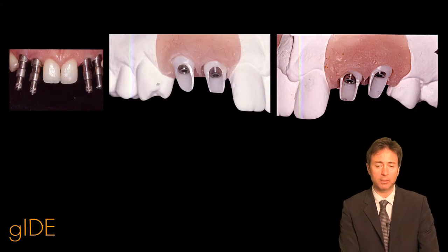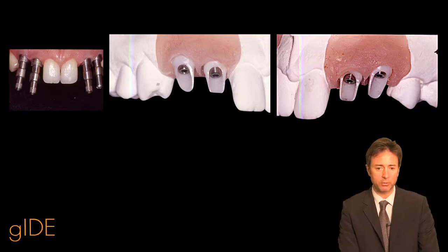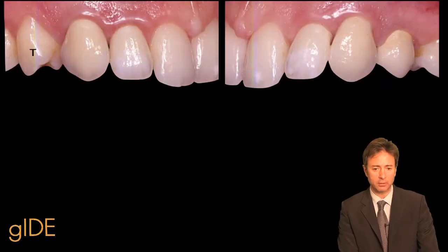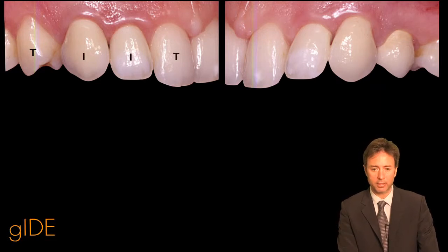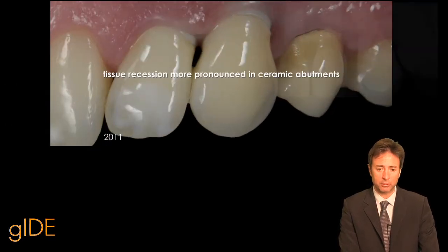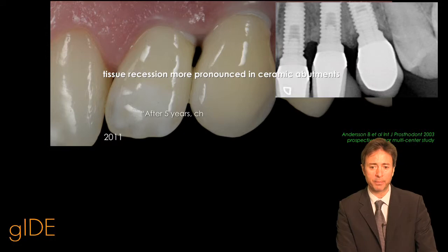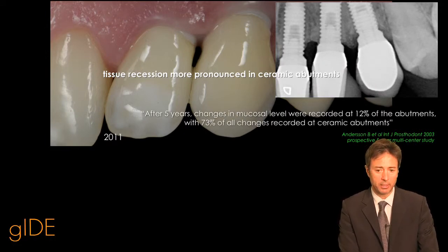I'm going to share with you a lot of cases like this one — an older case where we placed zirconia abutments about 10 years ago. We have seen that in many of these cases we have pronounced soft tissue recession, even where the bone looks good around these ceramic abutments.